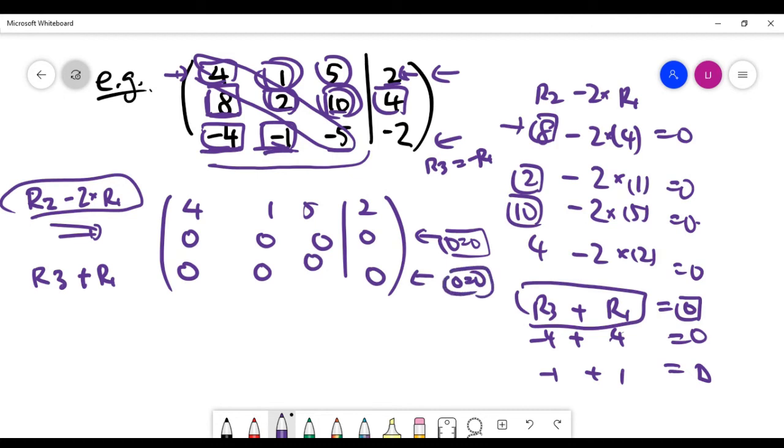Now, what does it mean? Zero equals zero, once again, it doesn't make the system inconsistent. It just carries no information on the system. It means that now we are left with only one meaningful equation, which is row one. So it means what?